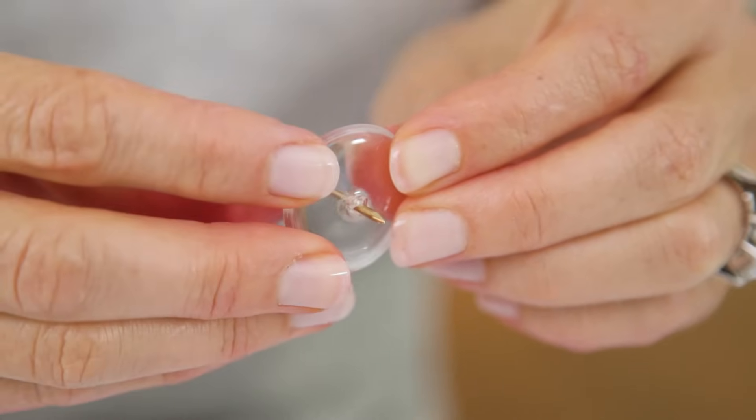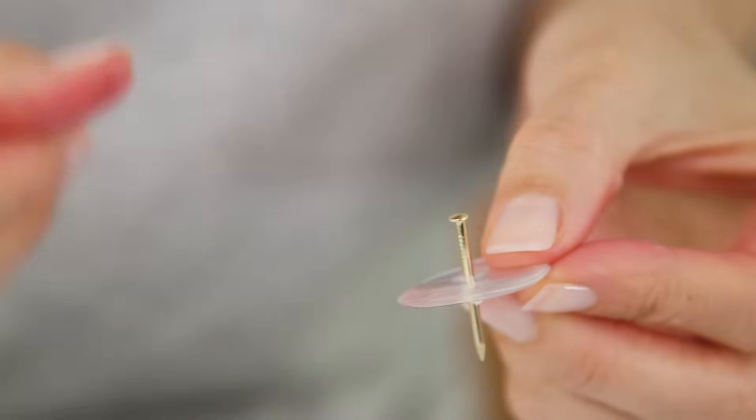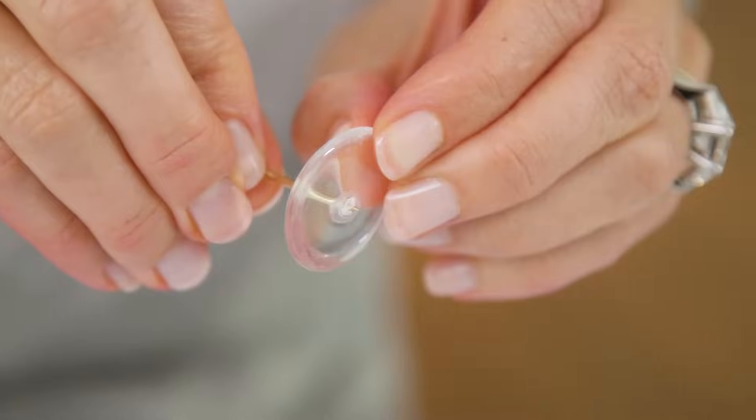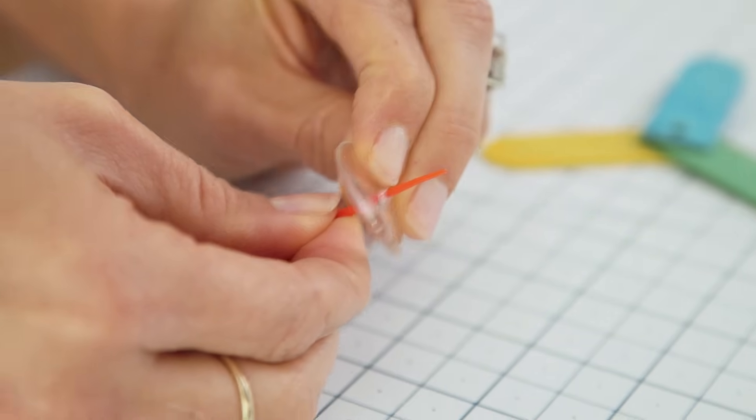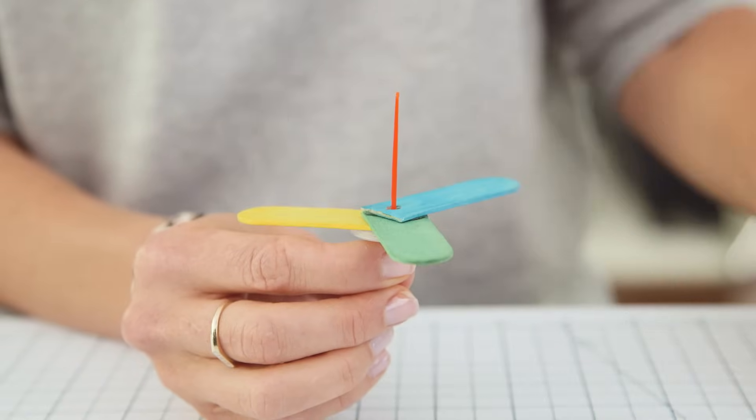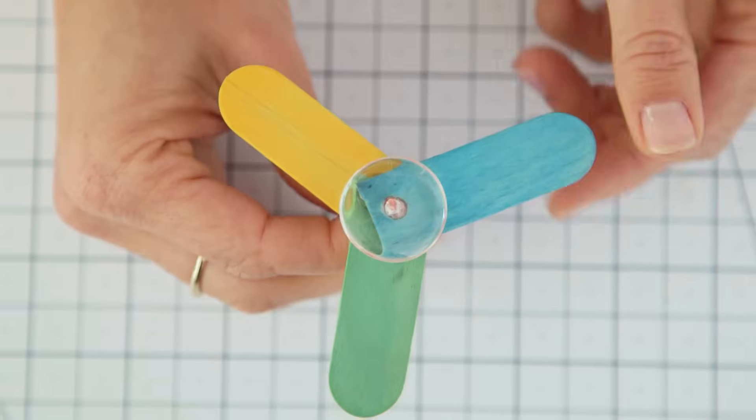Then use a needle or a nail and poke a hole directly in the center of your bubble cap. Repeat on your second piece. Slide the toothpick through the hole. It should feel nice and snug. Place the body of your spinner on top then slide on your second bubble cap. Trim off the ends of the toothpick and we're almost done.